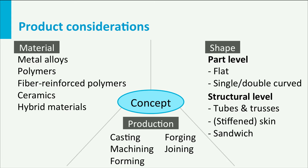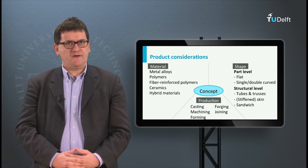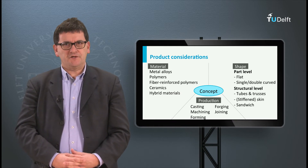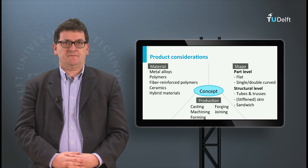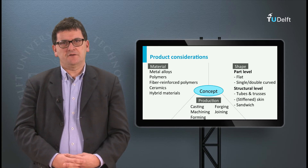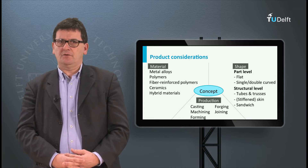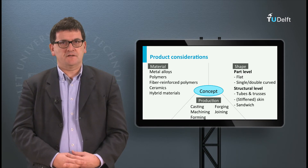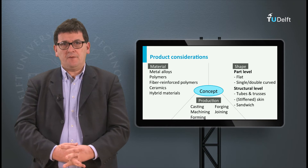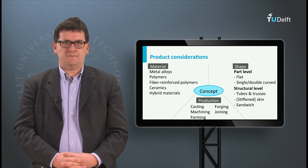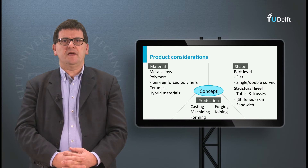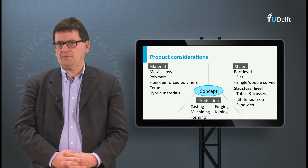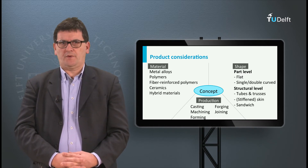I can underline that even more with this slide. If you need to develop a concept for a product or a structure, you need to choose a shape, a material and a feasible production method. When choosing for example a three-dimensional thin-walled shape, ceramics as a material option would not be possible. Metal alloys and composites might be feasible. A metal shape could be made by using a sheet-forming process. A composite shape could be made by using lay-up techniques. Casting or forging would not be possible, neither for metals nor for composites.